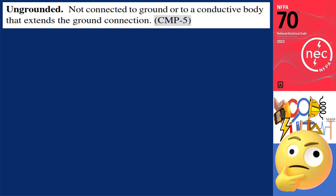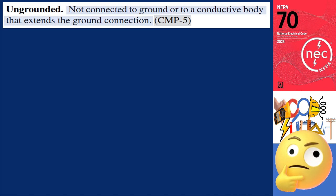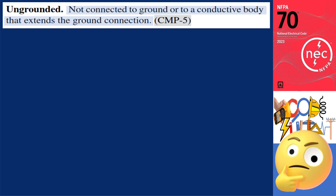Maybe some of you are wondering why there is still a need for grounding and bonding in an ungrounded system, especially since the code defines 'ungrounded' as not being connected to the ground or any conductive body that extends the ground connection. The term itself suggests a lack of grounding. However, before we proceed, let's take a moment to understand what exactly an ungrounded system is and how it is applied in practical scenarios.